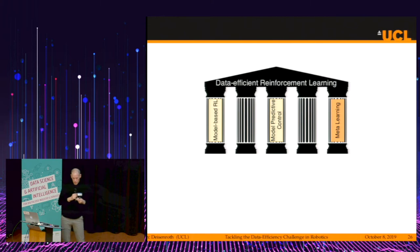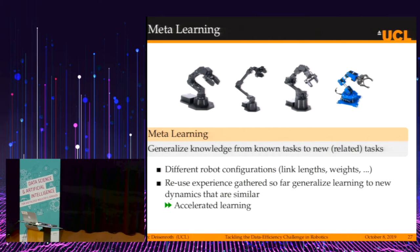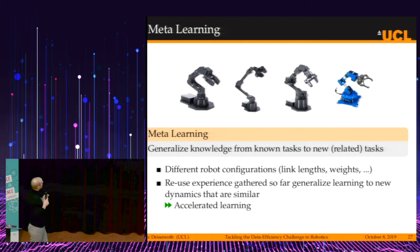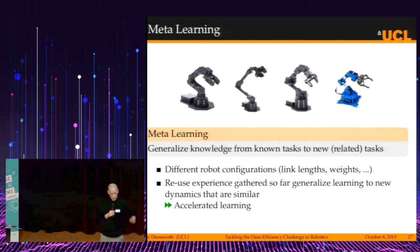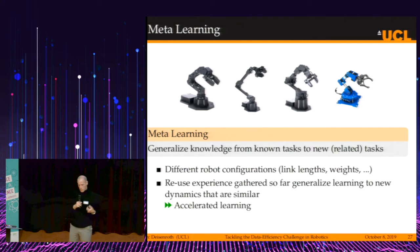The last part I want to talk about is meta-learning — a general framework for transfer learning. The idea is to generalize knowledge from known tasks to new or related tasks. Imagine four different robots with the same number of links but with different weights and lengths. We can learn predictive models and controllers for all of these robot arms from scratch independently, but there must be some way to transfer knowledge because they look similar and shouldn't behave too differently. That is exactly where meta-learning comes in.